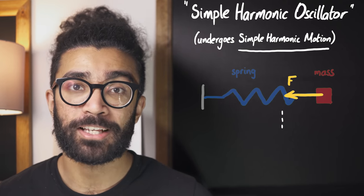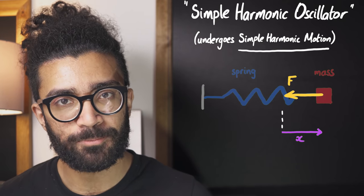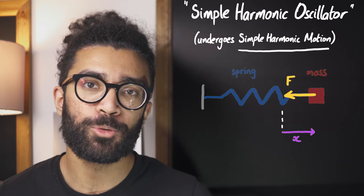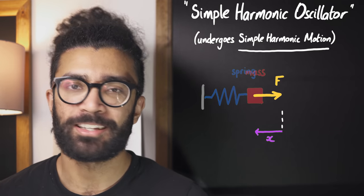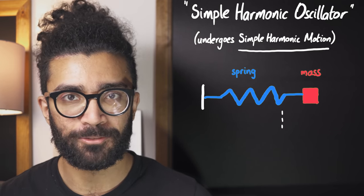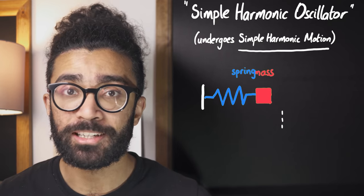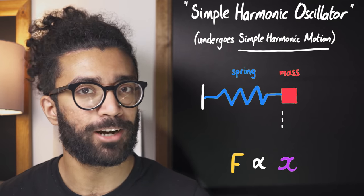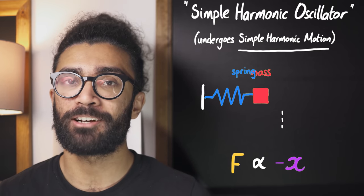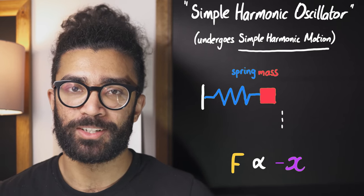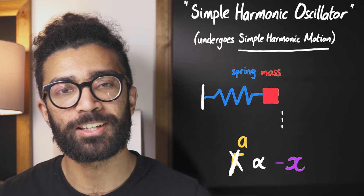Additionally, the force acts in the opposite direction to the displacement. So if we move the mass to the right, the force acts to the left, and if we move the mass to the left, the force acts to the right. Now the way that this mass moves — essentially bouncing back and forth left and right — is known as simple harmonic motion. Simple harmonic motion occurs, generally speaking, when the force is directly proportional to the displacement and the force is acting in the opposite direction to the displacement. Technically, simple harmonic motion is defined in terms of the acceleration of the object rather than the force, but close enough for our purposes.